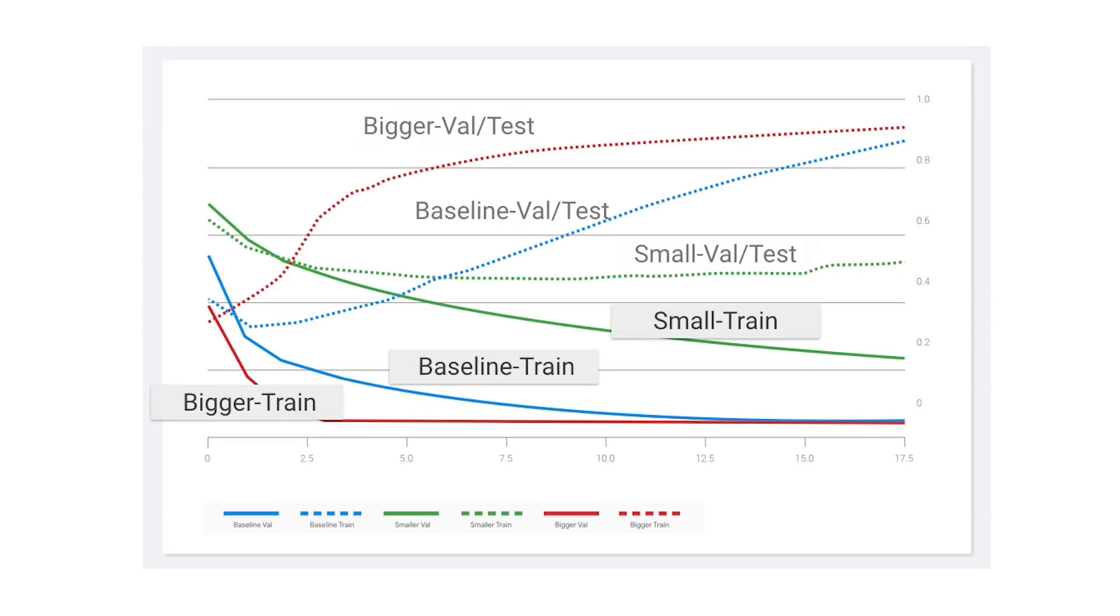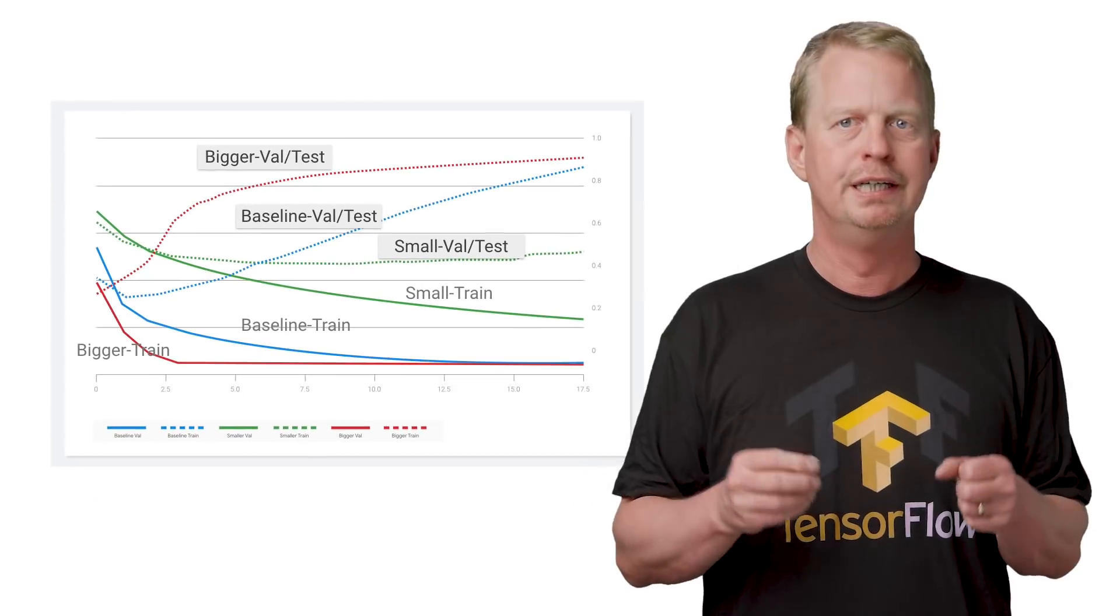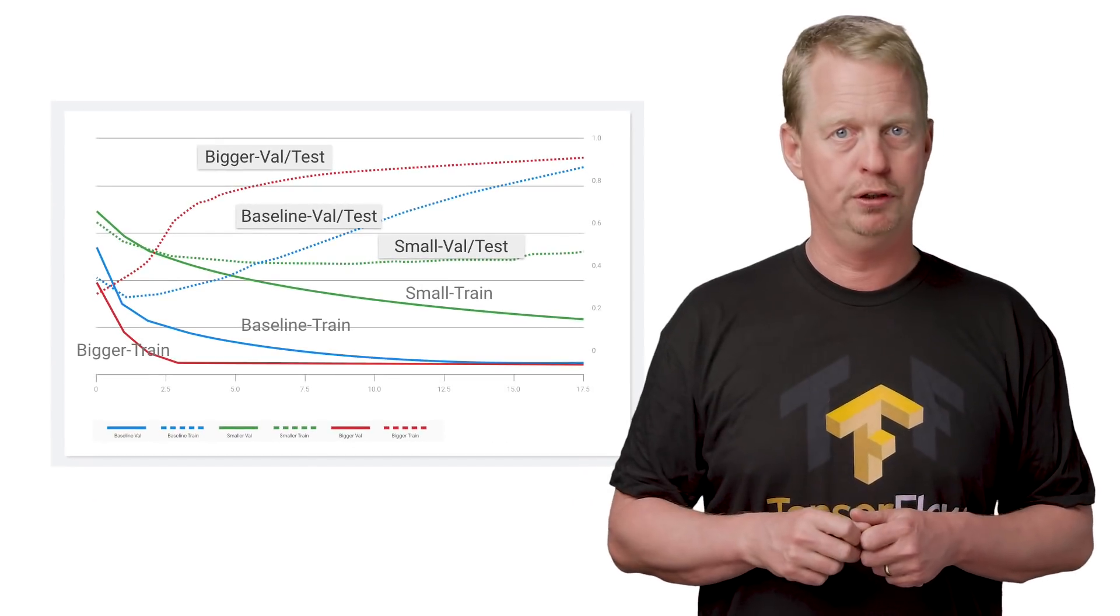For our discussion on overfitting though, what's more interesting is the validation of the models on the test dataset. Here you can clearly see that the loss quickly increases the more features our models have. This is a clear example of overfitting.